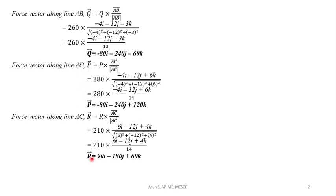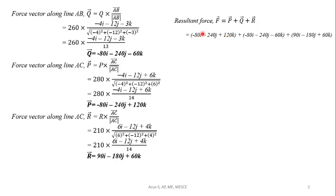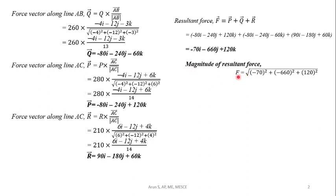The resultant force will be the vector summation of these three forces. So resultant force F equals P vector plus Q vector plus R vector. Adding: (-80i - 240j + 120k) + (-80i - 240j - 60k) + (90i - 180j + 60k). We get the resultant force vector as -70i - 660j + 120k. The magnitude of resultant force is found by taking the root of the sum of squares of the coefficients: F equals root of ((-70)² + (-660)² + 120²), giving magnitude of resultant force F as 674.46N.